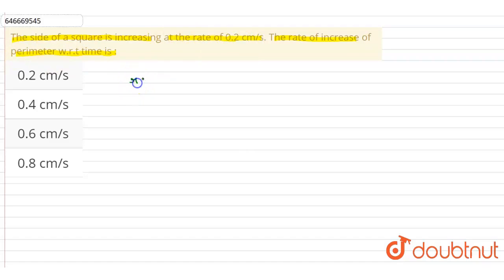So let me write here: the rate of increase in side of a square with respect to time is 0.2 centimeter per second. Let's say side of a square is x. Then rate of increase is dx by dt is equal to 0.2 centimeter per second.